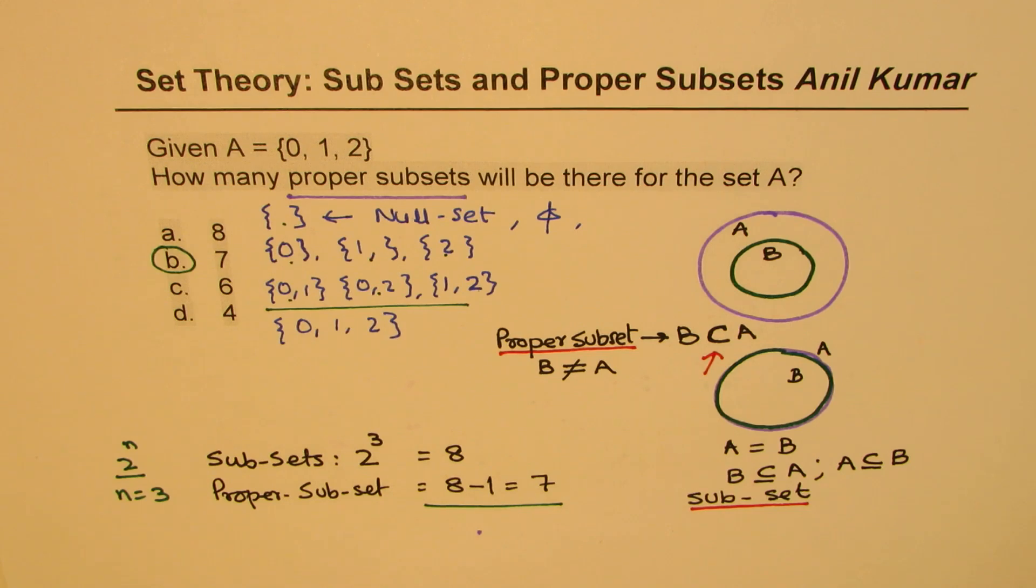So that is how you have to count the proper subsets. Phi or null set is counted in the proper subset and a set equal to the given set is not counted. I hope that makes sense. Feel free to write your comments and share your views, and if you have questions don't hesitate to send an email in the given address. Thanks and all the best.